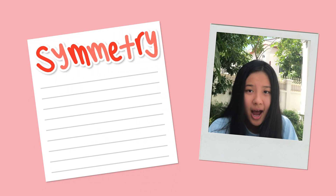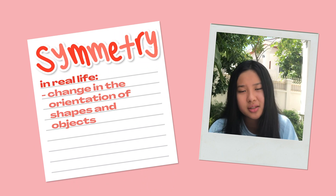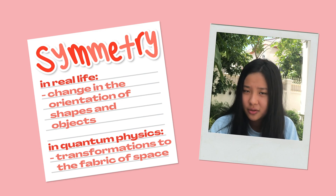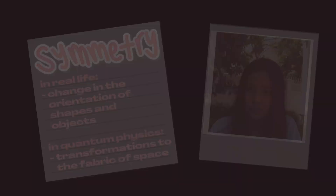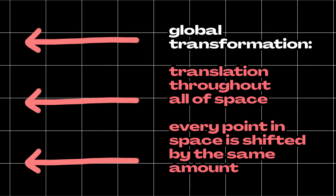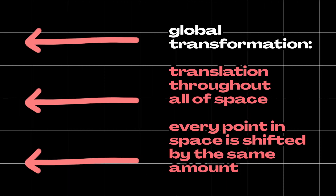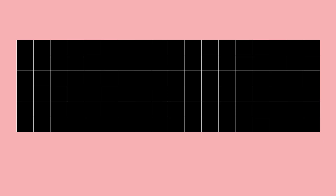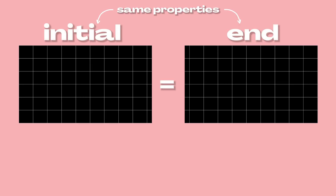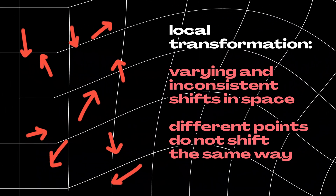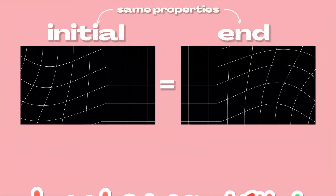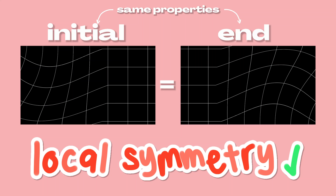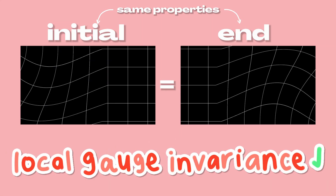This isn't too far from what symmetry is in quantum physics. However, instead of simply changes in the orientation of shape, we're talking about transformations to the very fabric of space-time itself. When these transformations are universal — meaning every single point throughout the entire universe is changed the same way — and the end result has the same properties the universe did before, we call this global symmetry. However, if we were to apply varying transformations but still conserve the same properties of the universe, we will have a local symmetry, or more scientifically, local gauge invariance.